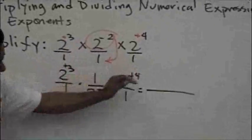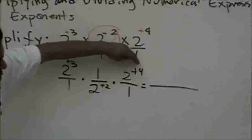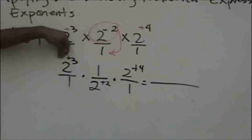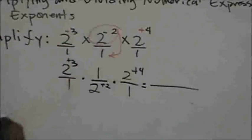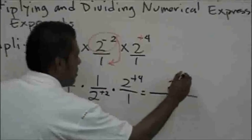Now I start collecting all of my terms that are the same. Obviously I have two to the third, and I have a two to the fourth. So this is telling me I have three twos, while this one's telling me I have four twos. So that's a total of two to the seventh power.